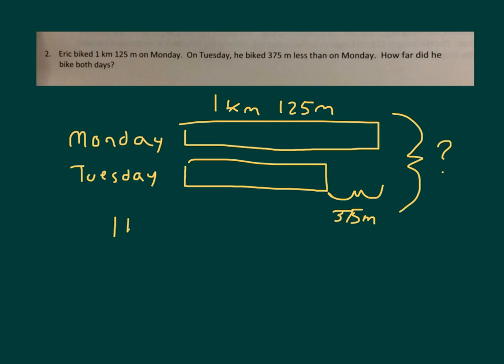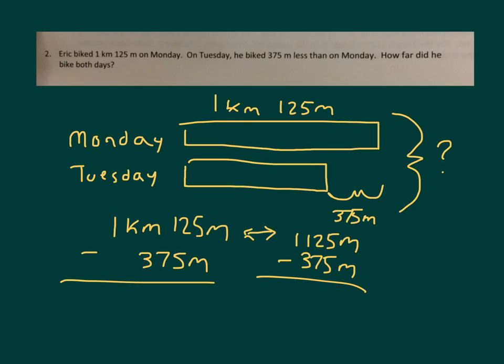So on Monday, we're taking 1 kilometer, 125 meters, and subtracting 375 meters from that. What we can do is that we can rename the 1 kilometer, 125 meters, into meters. That would be 1,125 meters minus 375 meters, and this will give us the answer for Tuesday. After we get our answer for Tuesday, then what would we do? Make sure that you have like units to be able to add. And make sure when you figure out the amount that Eric biked for both those days, make sure to express it in kilometers and meters. Make sure to write that statement out.